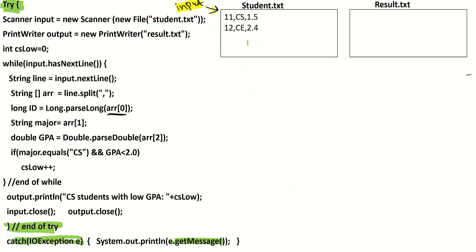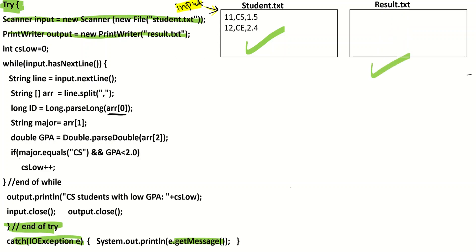If student.txt is okay but result.txt does not exist, it will be handled differently. When you open result.txt for writing using PrintWriter, if the file does not exist, Java will automatically create a new empty file for you. Then the program continues normally and all the processing will be done.